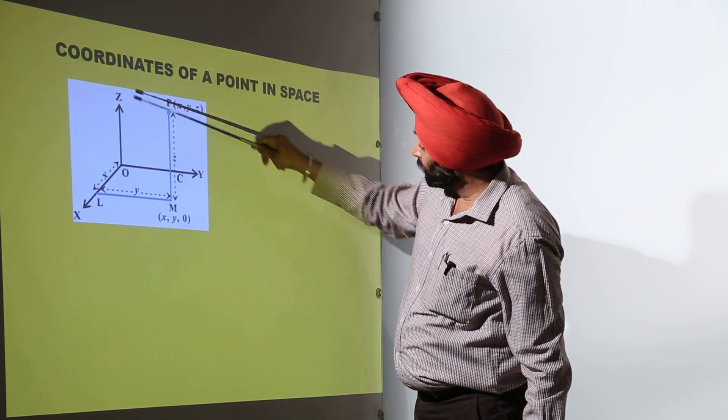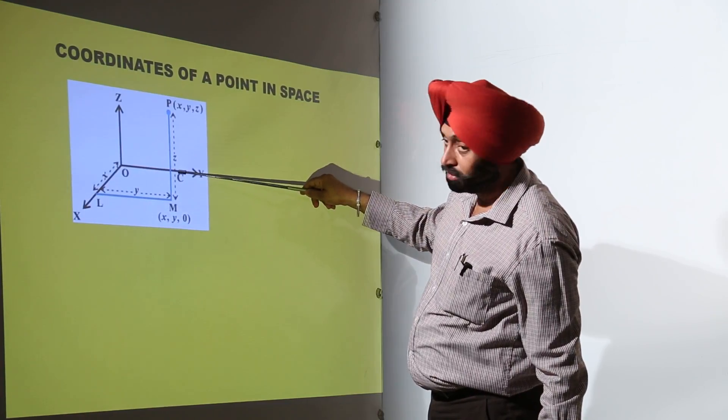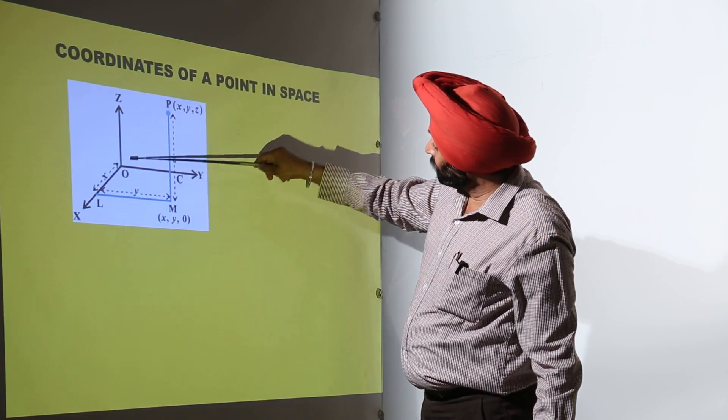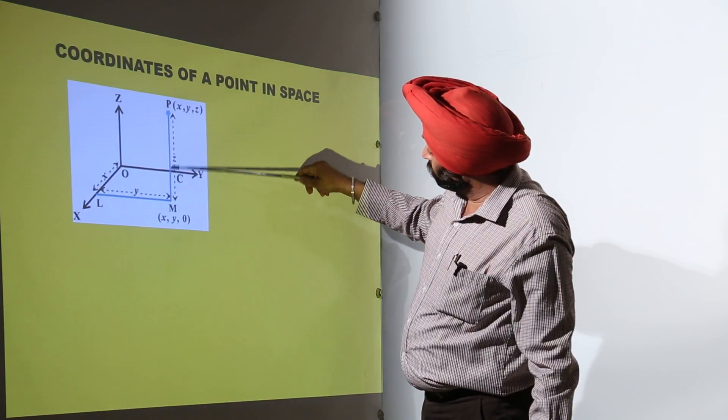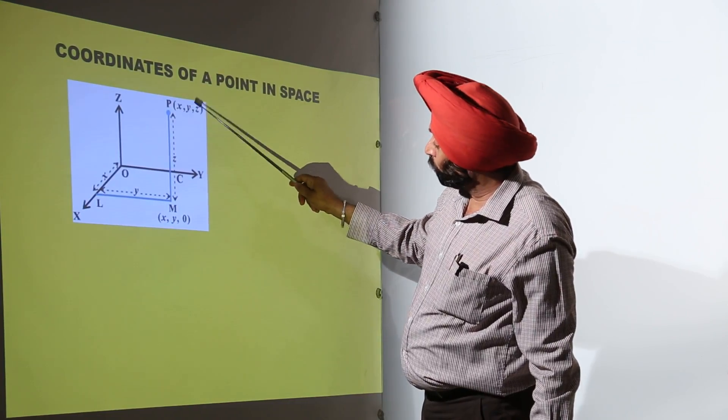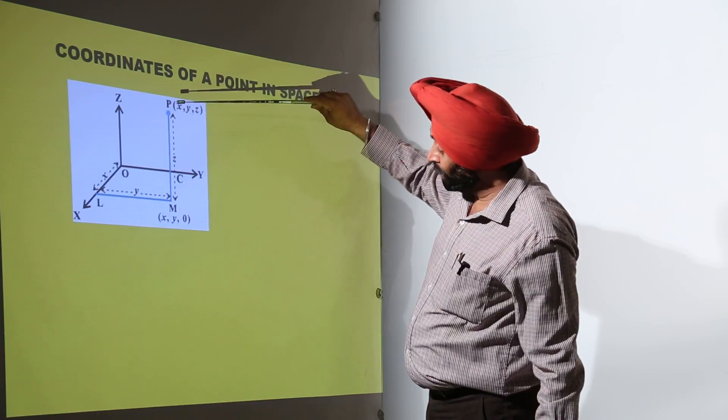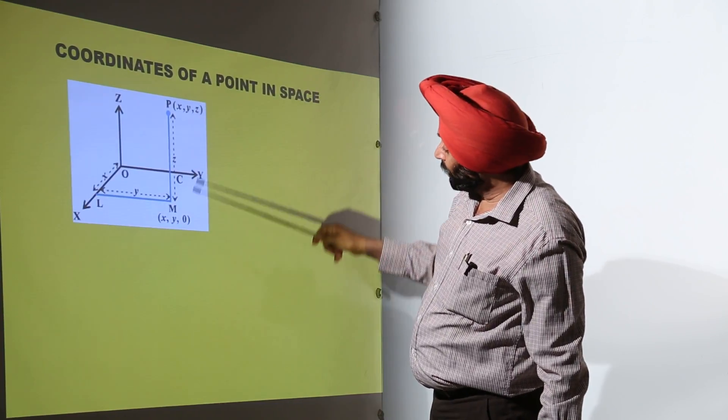Then we are having LM, it is Y on this part, on Y axis. Then we are having on OZ, we are having MC. So basically when we are having OZ from here to here, so this point XYZ, Z is what, in the first coordinate.